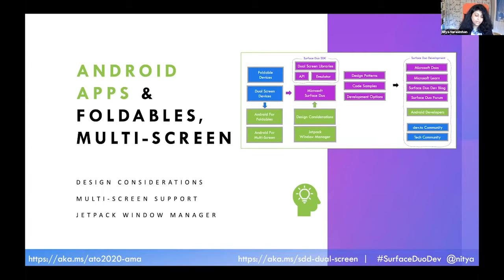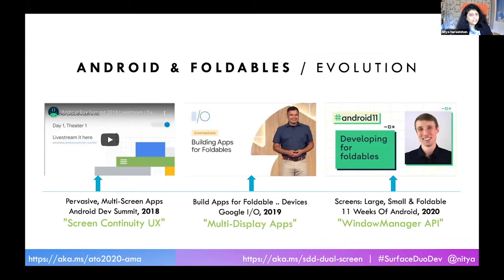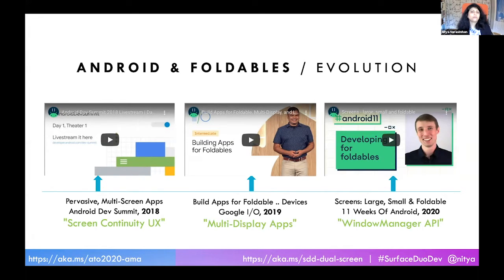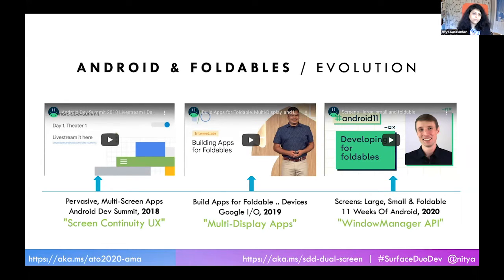Now we're going to move into the green boxes and talk about what Android does for you in the foldable space. The first version of conversations around foldable happened in 2018 at the Android Dev Summit — the year we started seeing the first flexible display foldable phones. That talk focused on screen continuity user experience, meaning Android is automatically set up so that when you move from one screen modality to another, your app is able to reconfigure and build responsive layouts. They talked about having a flag — something that lets you say 'I'm a resizable app, please let me know when you have fold and unfold events and I'll handle them.'